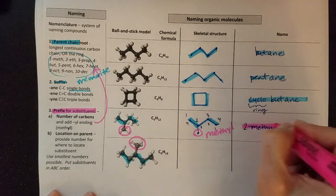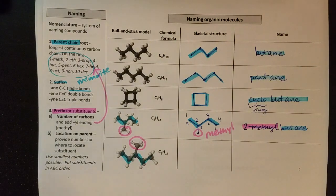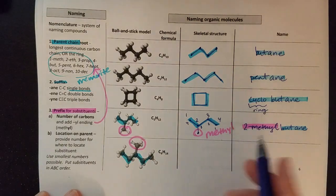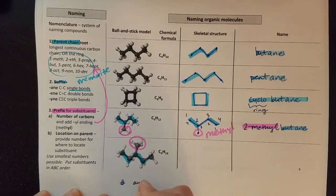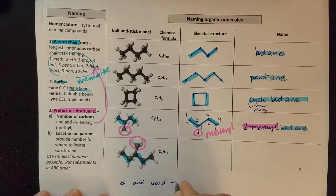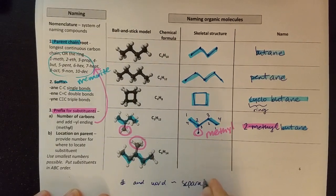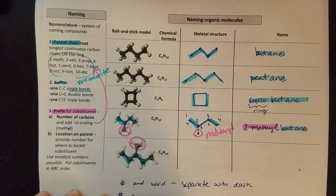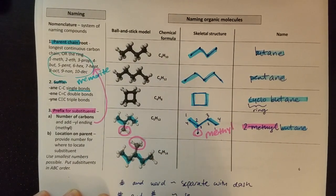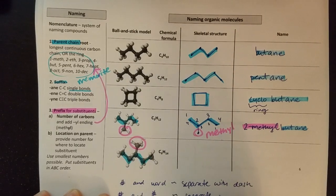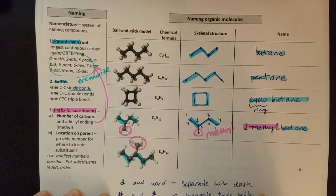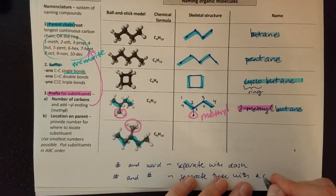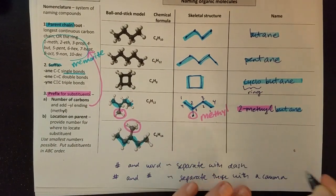So the name ends up being 2-methylbutane. Butane is my root, the 2-methyl is telling me about my substituent. You might notice a little bit of punctuation here. Anytime I have a number and a word, I separate those with a dash. And anytime I have a number and another number, which we haven't seen yet, I'm going to separate those with a comma.